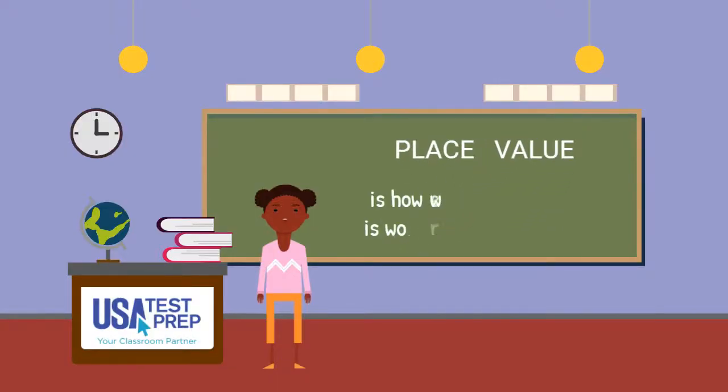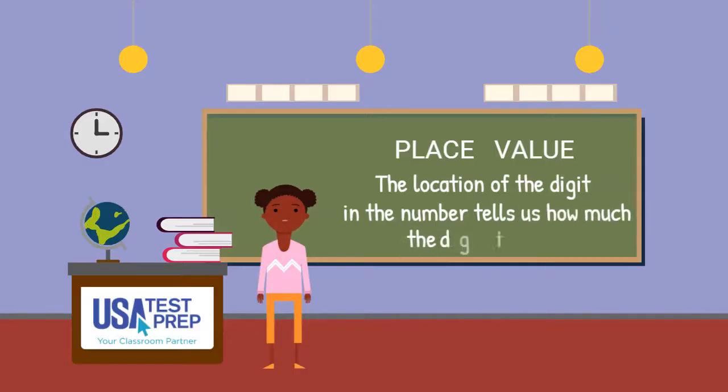Place value is how we know what a digit is worth in a larger number. The location of the digit in the number tells us how much the digit is worth.